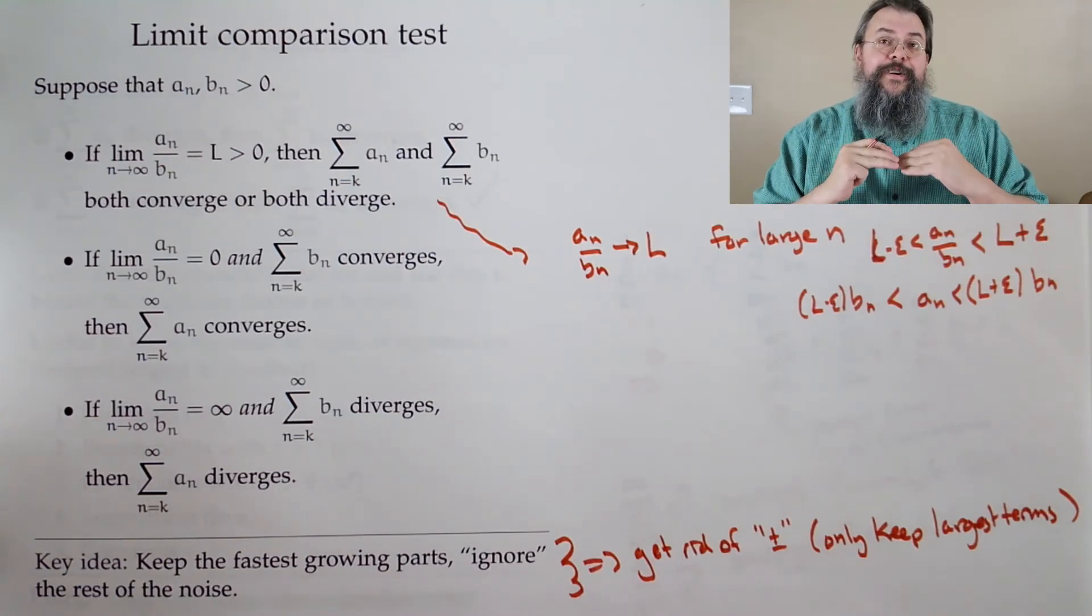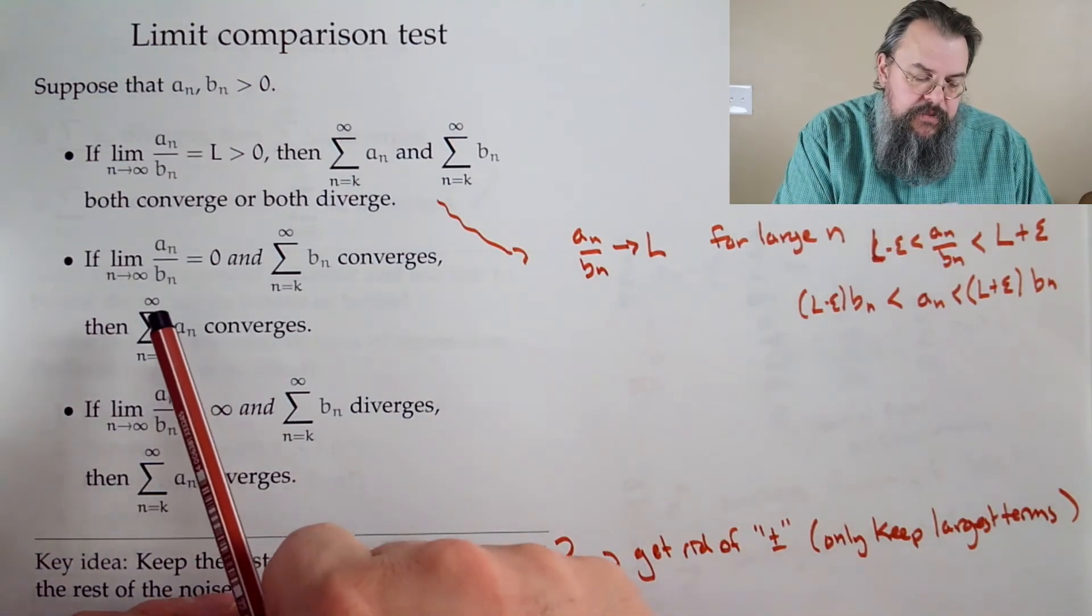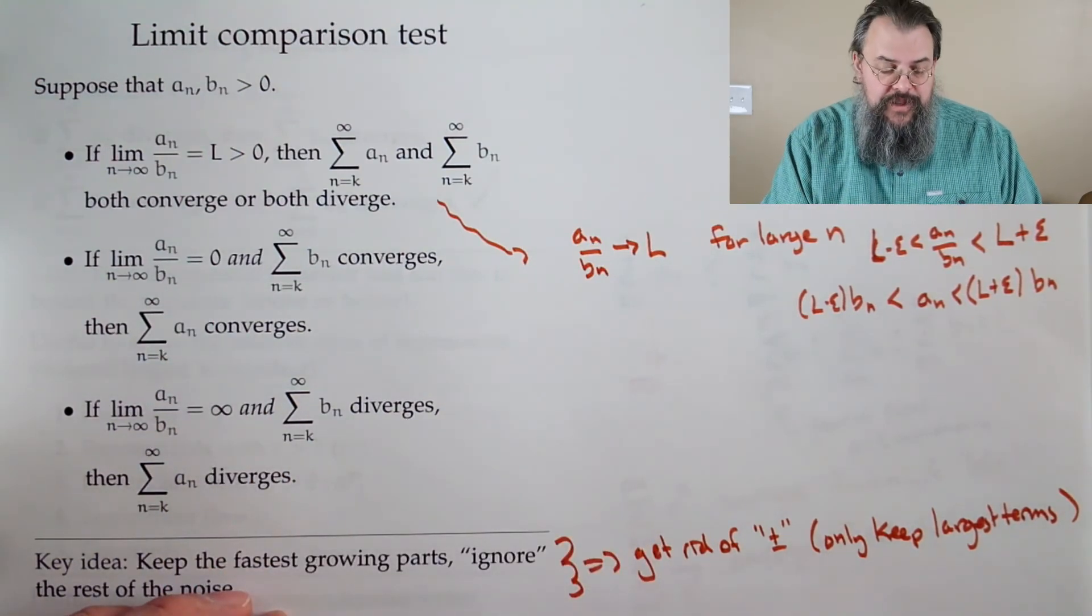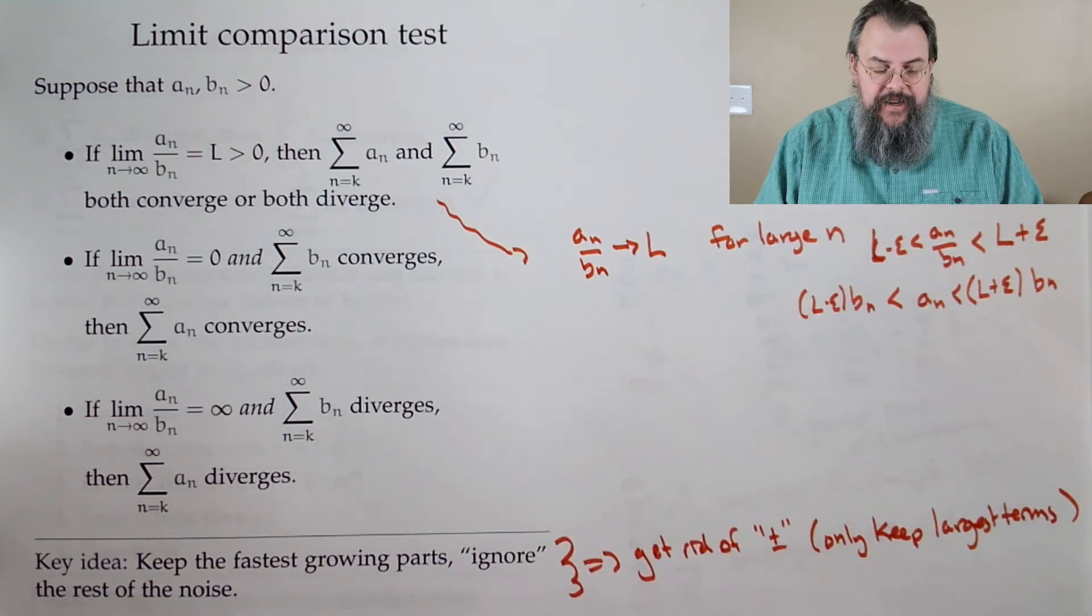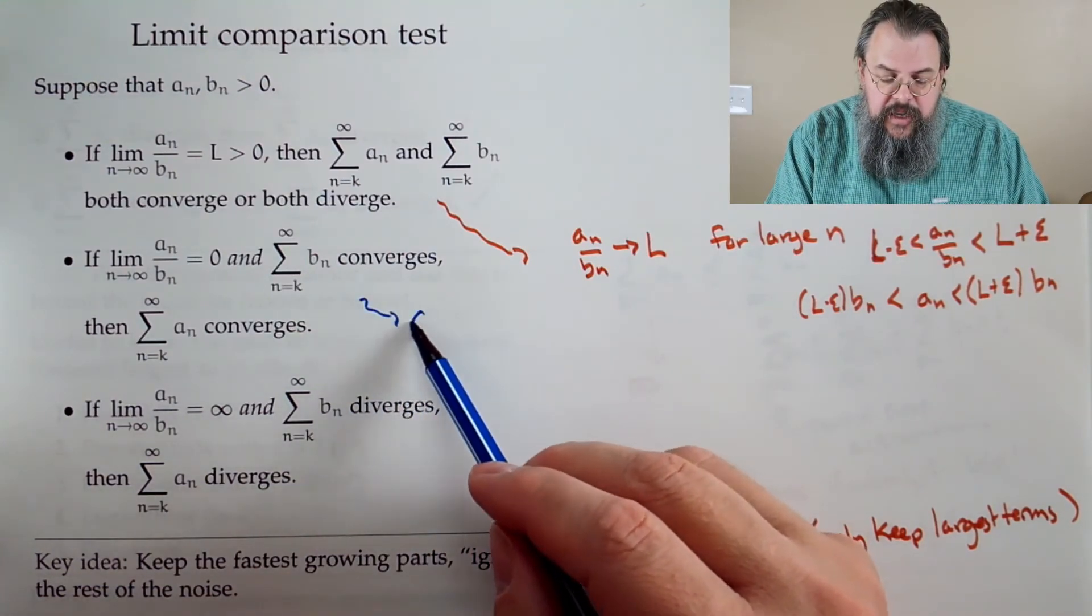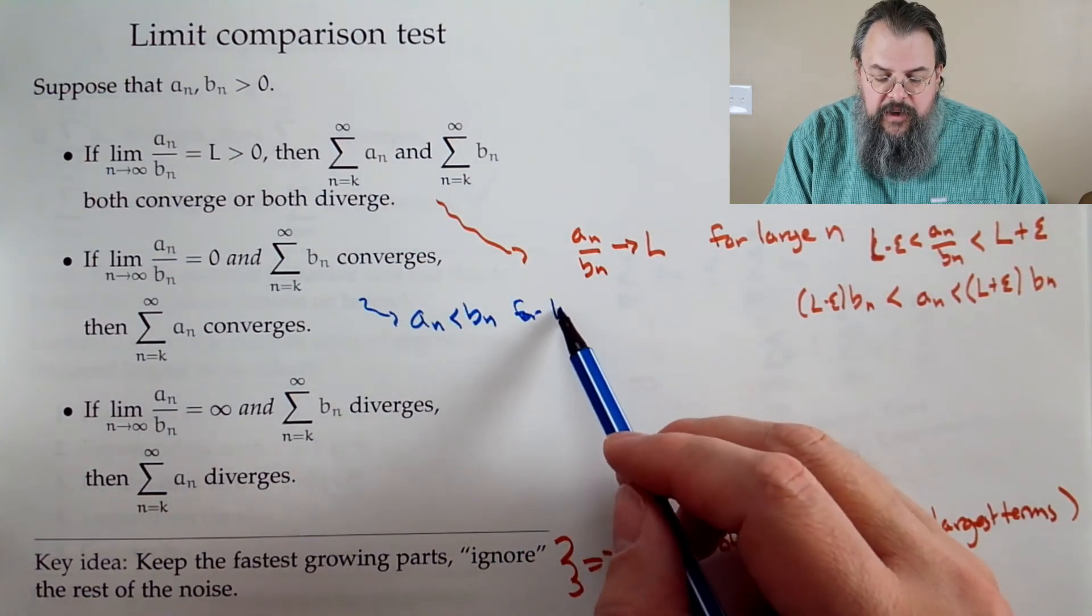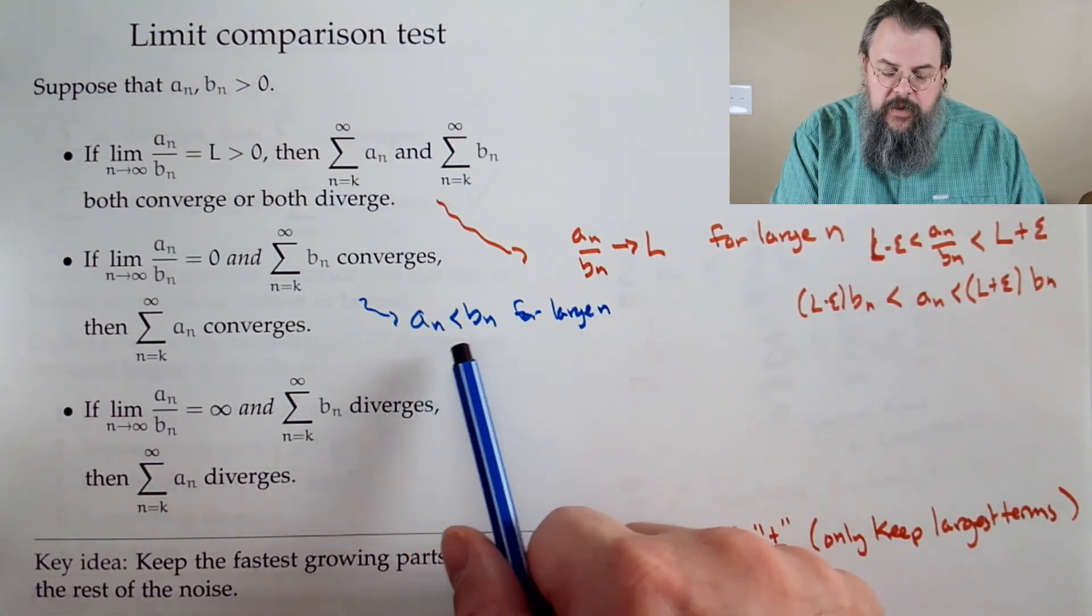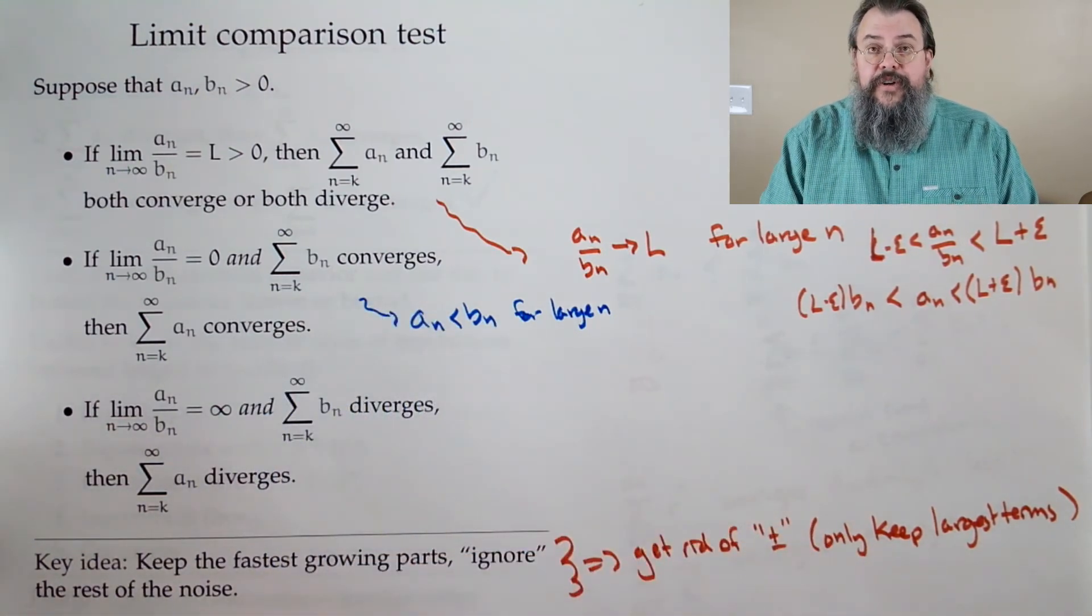So that's if our limit is some finite number. What happens if it's not? If a sub n over b sub n goes to zero, how is that possible? If a sub n over b sub n goes to zero, what it's really saying here is that a sub n over b sub n is small. So in particular, a sub n is less than b_n for large n. That's the only way that's possible. And so, we know that for large n, a sub n is below b sub n. So if b sub n converges, a sub n converges.